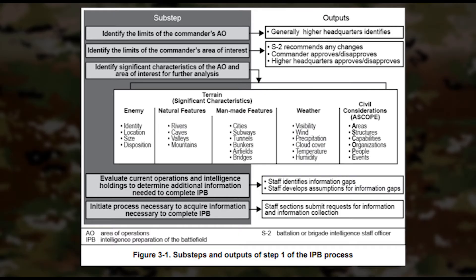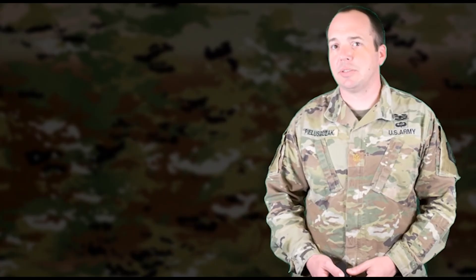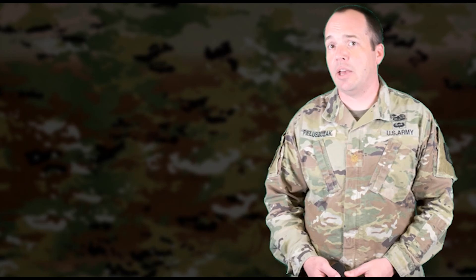For briefing purposes, an overlay with the identified AO and AOI should be labeled for recommended approval by the commander. Chapter 3 in ATP 2-01.3 provides an example you should review and compare to your mission command SOP. If you're using a mission command system like CPCE, D6A, or CPOF, create an overlay and highlight the AO and AOI with graphic control measures as shown in field manual 1-02.2 military symbols.